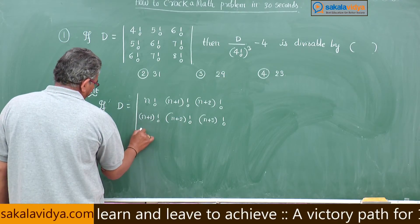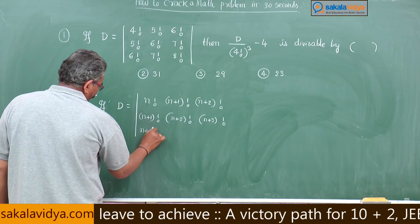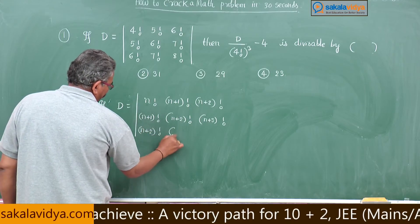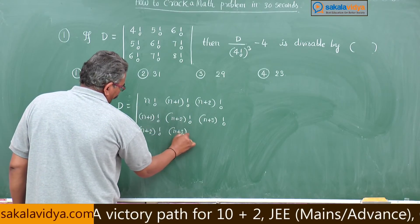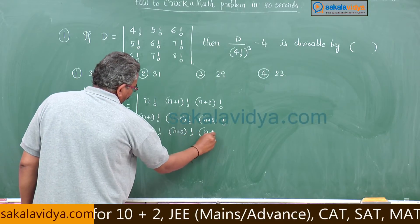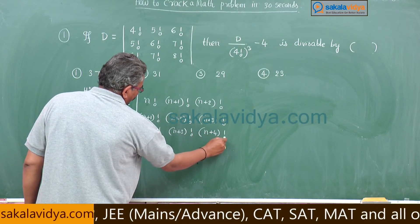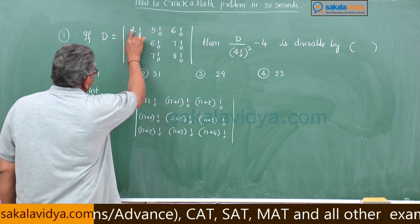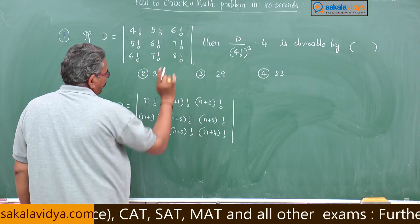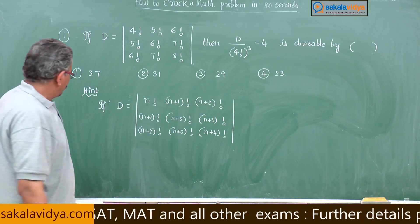Next here N plus 2 factorial, N plus 3 factorial, here N plus 4 factorial, you can check it. If you substitute N is equal to 4 here, 4 plus 4 factorial.